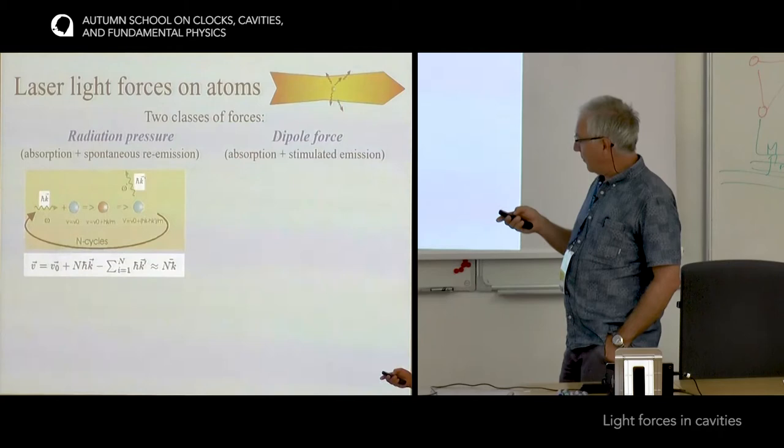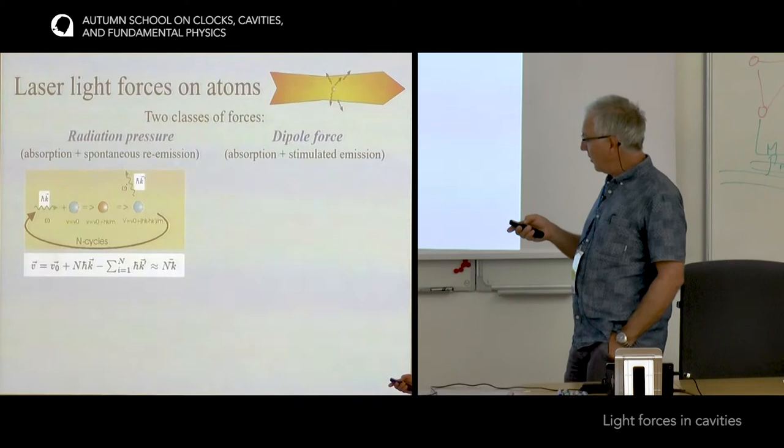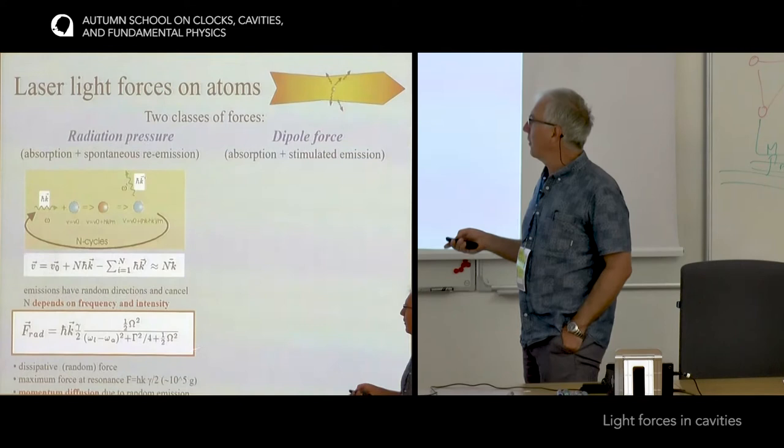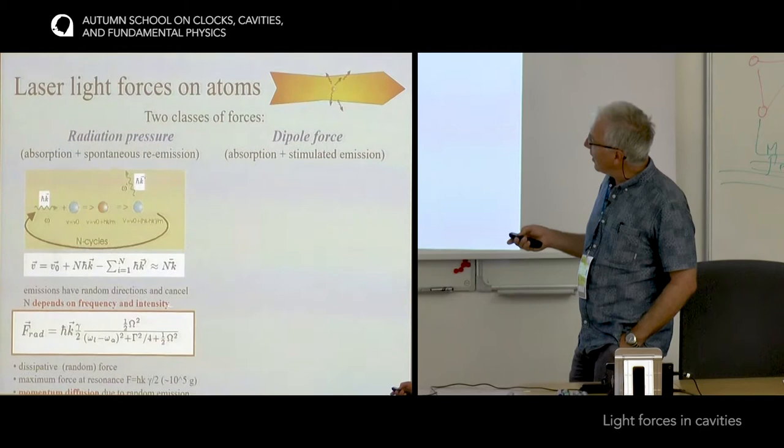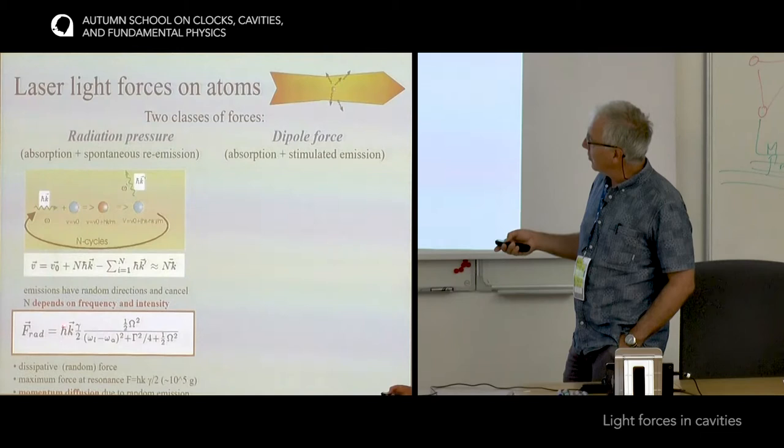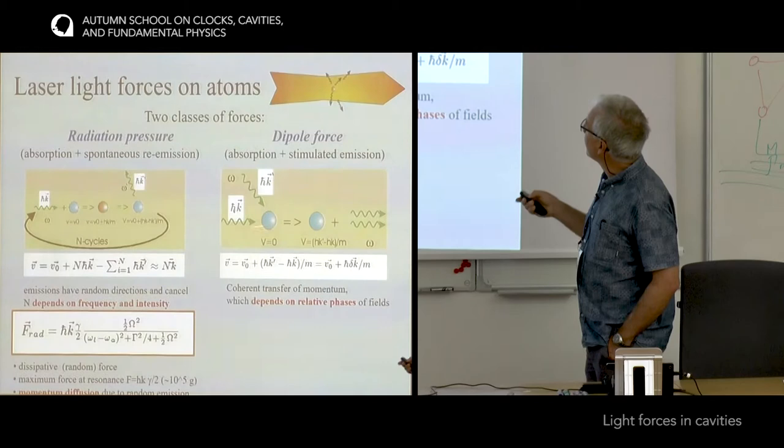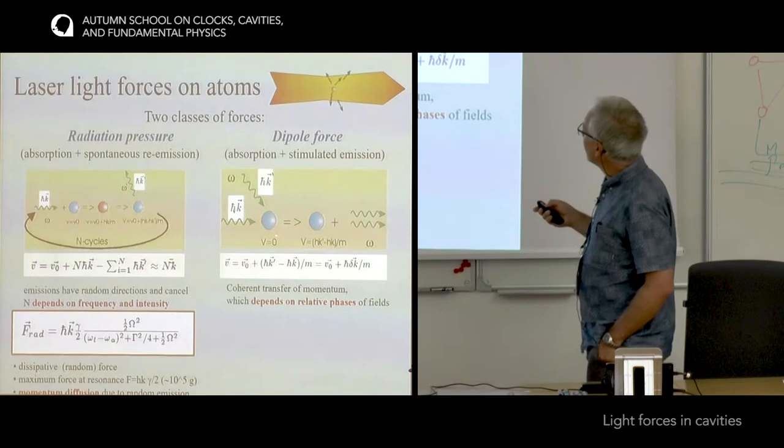Just to repeat from the first day lecture of Florian. If you have an atom in a light field, there are two types of forces. One is just absorption and emission, the cycling force or the radiation pressure. This can be simply calculated for a two-level atom to be proportional to the excitation of the atom. It's the excitation rate times the momentum of a single photon and half of the spontaneous emission rate. This is the standard radiation pressure force.